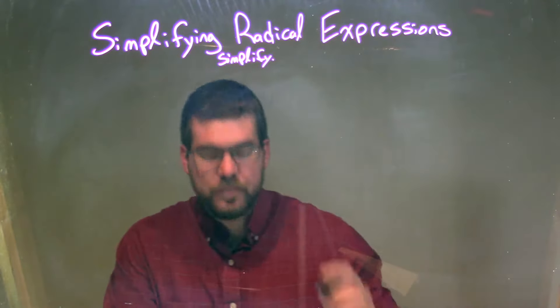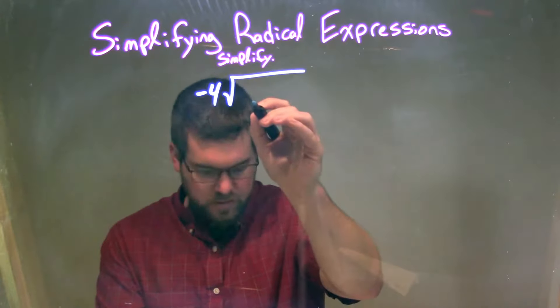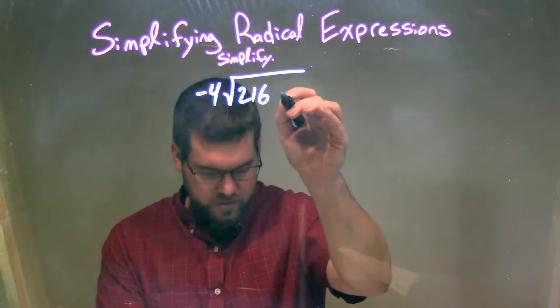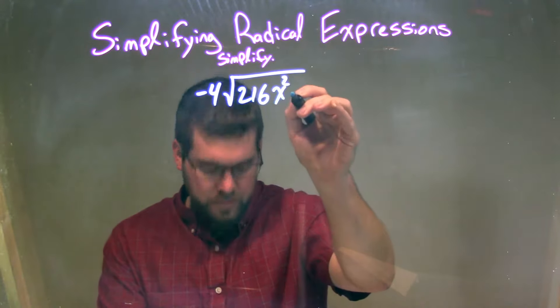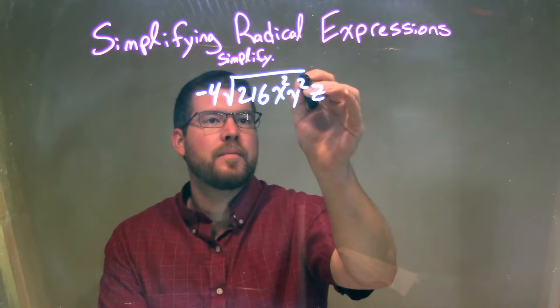So if I was given this expression, negative 4 times the square root of 216x squared y squared times z.